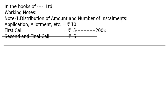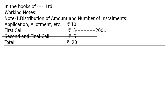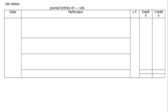Then, 10 days later — this is on May 1 — the totaling is Rs.20 and number of shares forfeited and re-issued is 200. 10 days later, the re-issue date gives a total of Rs.3,000.